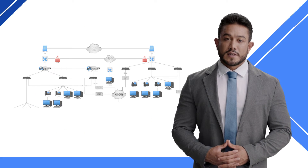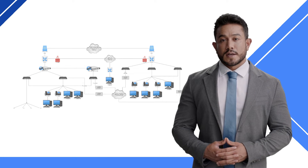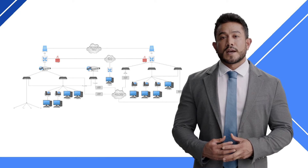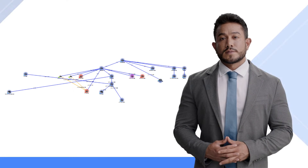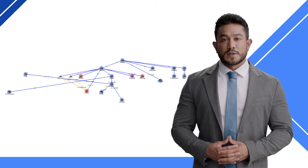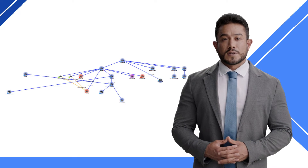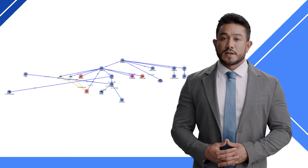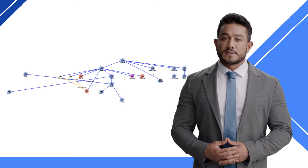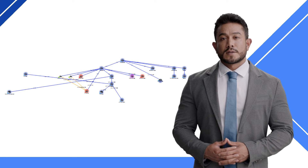Network architecture diagrams show the overall structure of a network, including the different layers and components. Finally, wireless network diagrams show the connections between wireless devices such as laptops, smartphones, and tablets. Each type of diagram serves a specific purpose and provides administrators with valuable information.